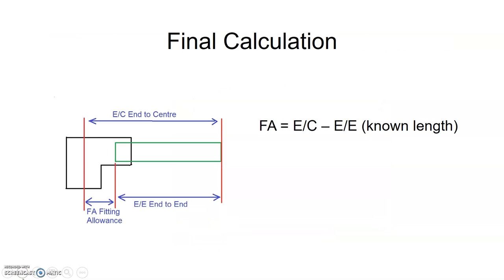Now our final calculation: we take our end-to-center measurement and subtract it from our end-to-end, our known length, and that will give us our FA. So finding our FA with a nipple piece is simply FA equals end-to-center subtract end-to-end.